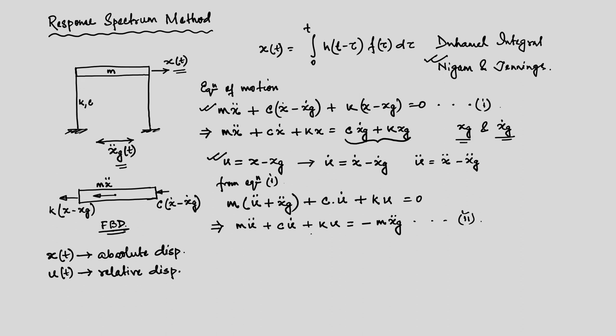Looking at equation 2, the left-hand side is the familiar form of the equation of motion. On the right-hand side, the forcing function is mass times the ground acceleration — that is the force acting on the structure when the equation of motion is expressed in terms of u, the relative deformation. We prefer this equation because ground acceleration x_g-double-dot is what we actually measure.